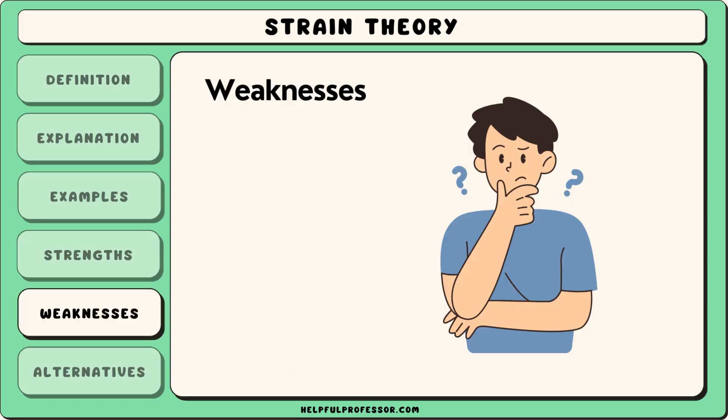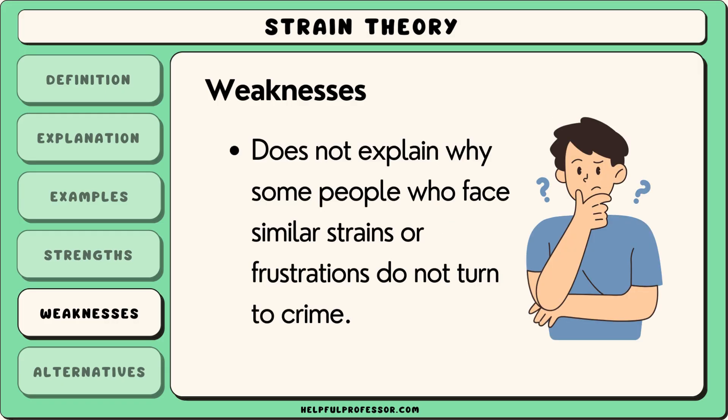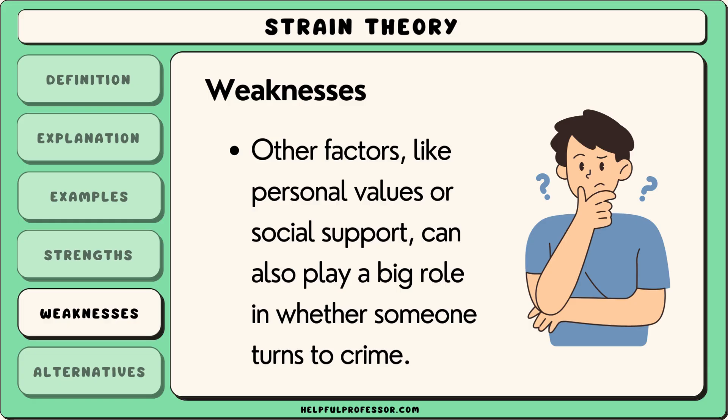However, strain theory also has weaknesses. One criticism is that it does not explain why some people who face similar strains or frustrations do not turn to crime. For example, not everyone from disadvantaged backgrounds turns to illegal activities even when they face barriers. This suggests that other factors like personal values or social support can also play a big role in whether someone turns to crime.